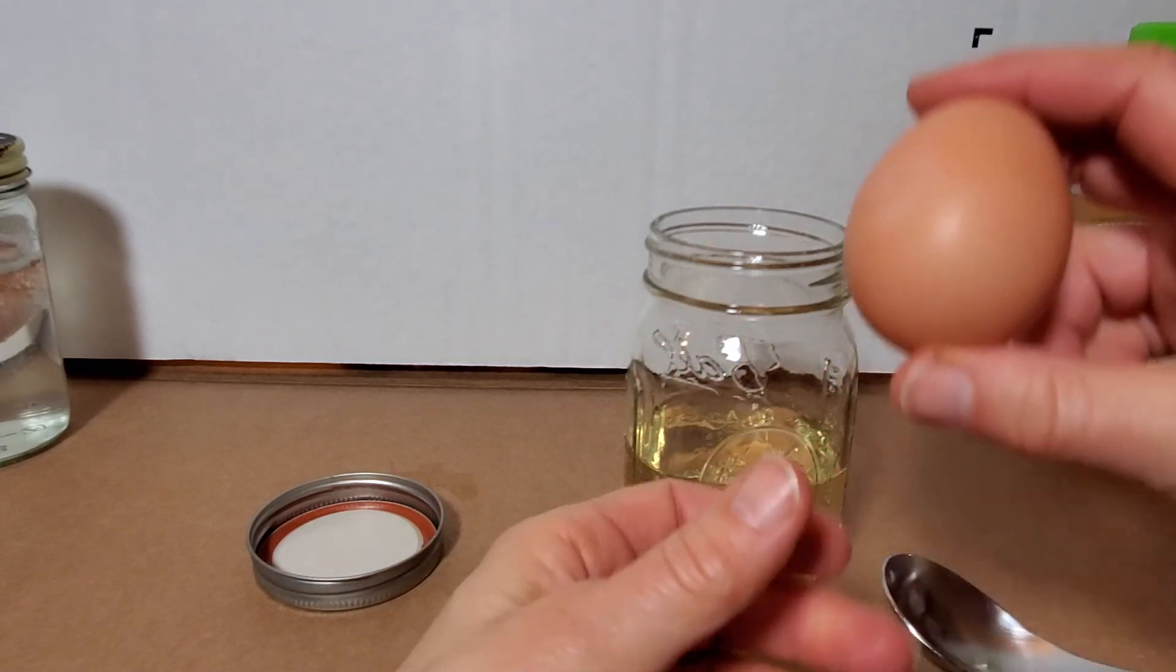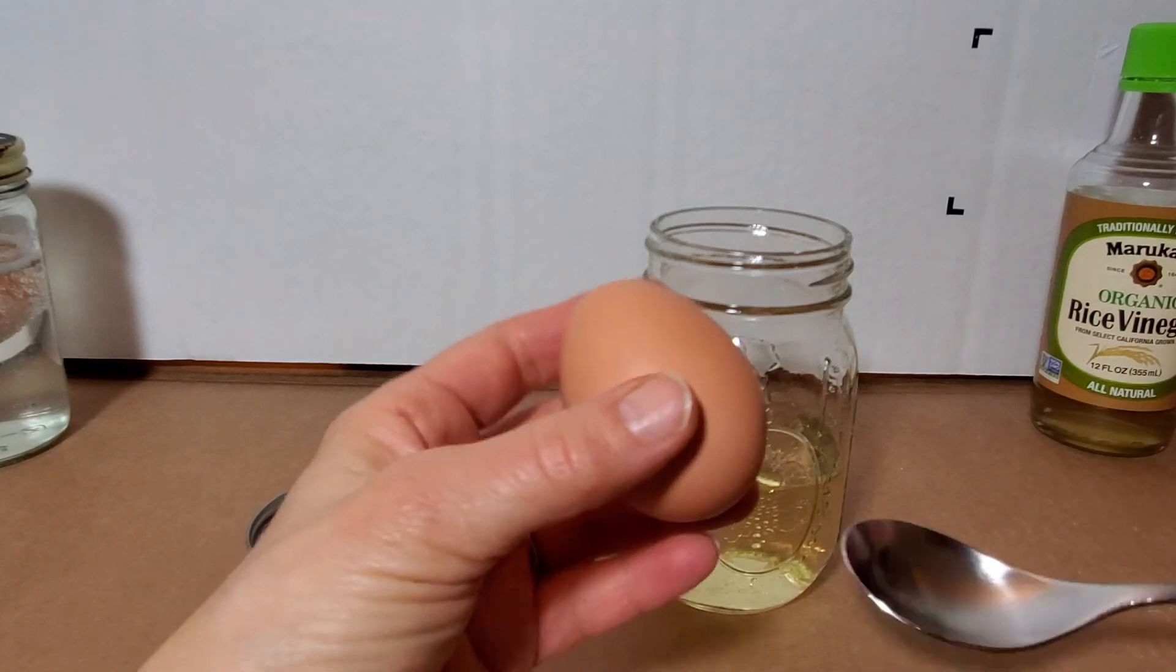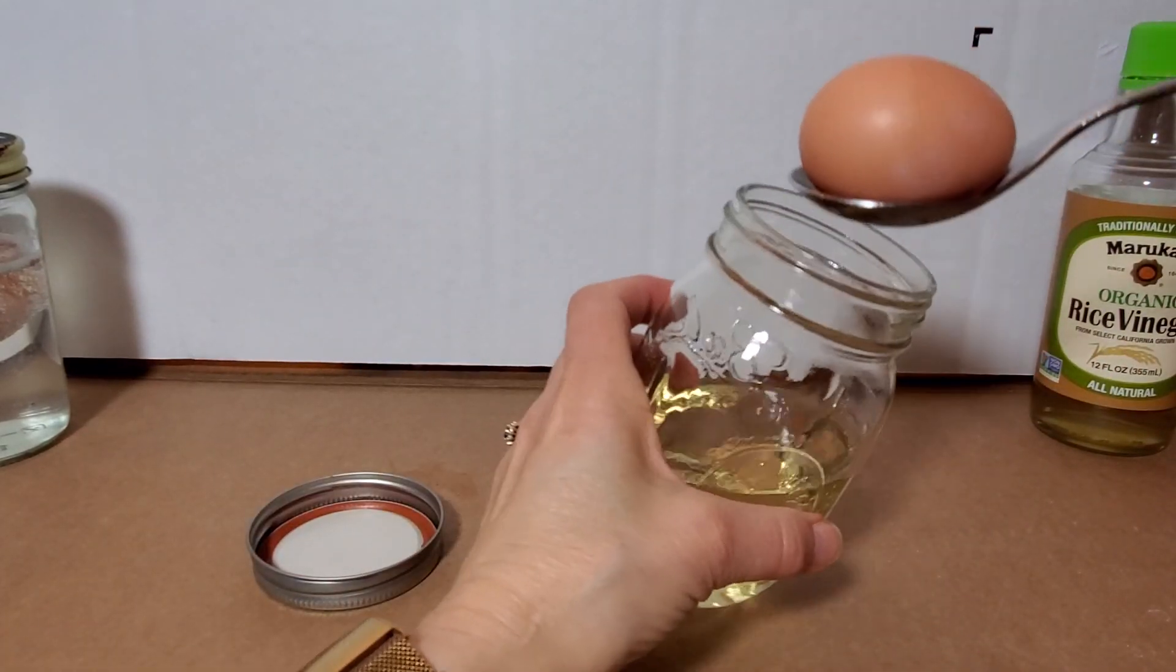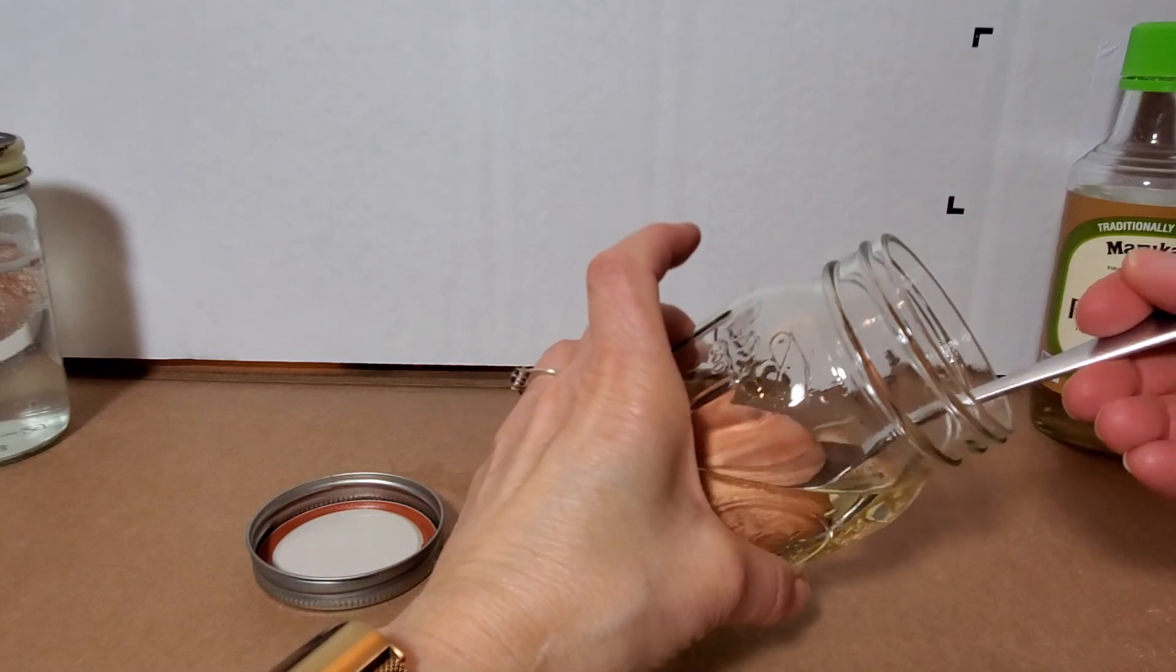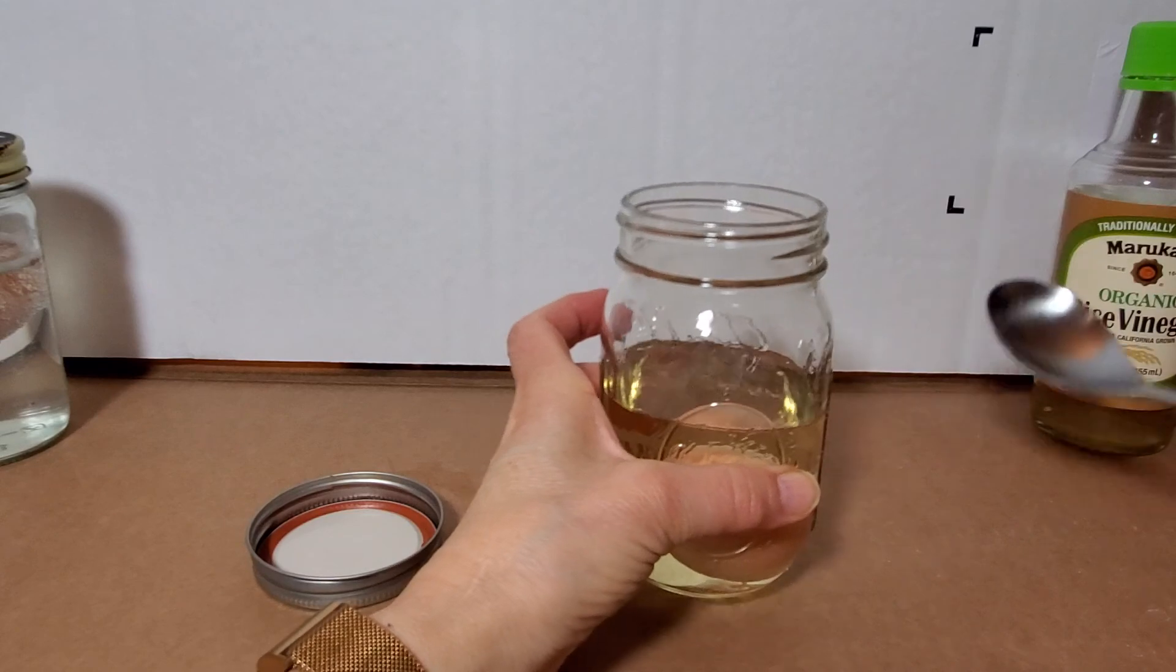So it makes a great macroscopic model of a cell that we can use to model some of the processes that would be hard for us to see otherwise. So I'm going to use a spoon to drop it in carefully so that I don't crack my egg when I drop it, and that's it.